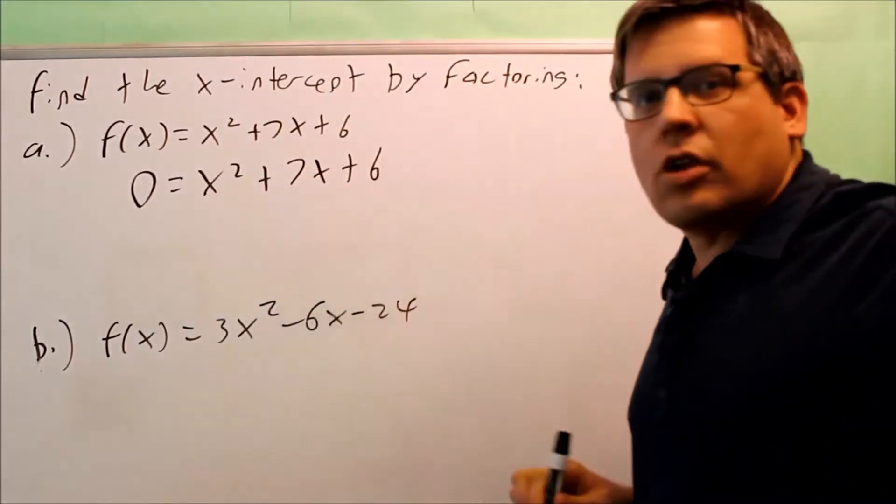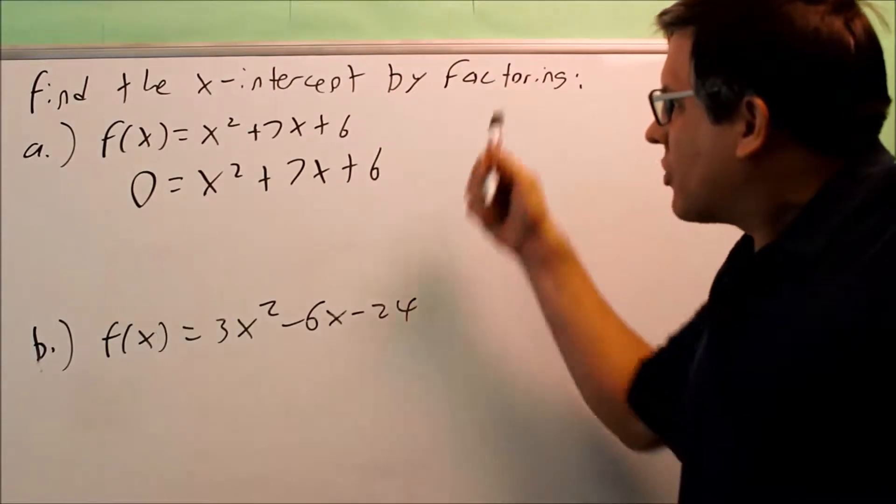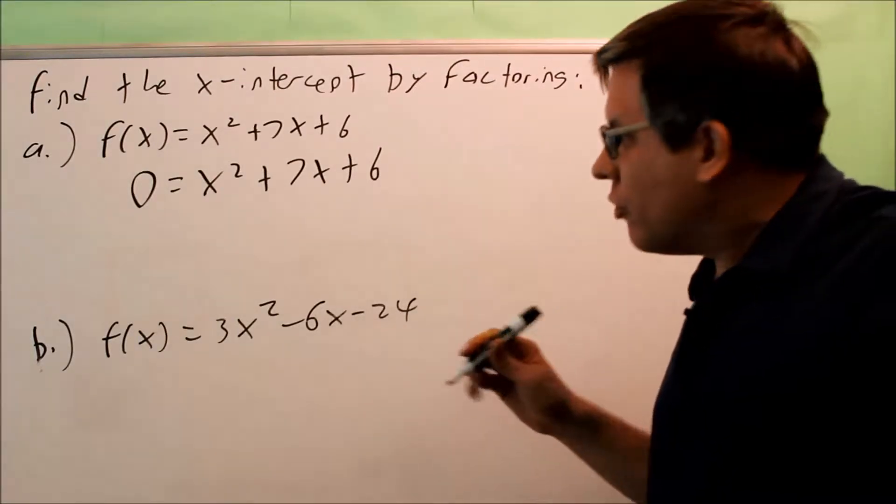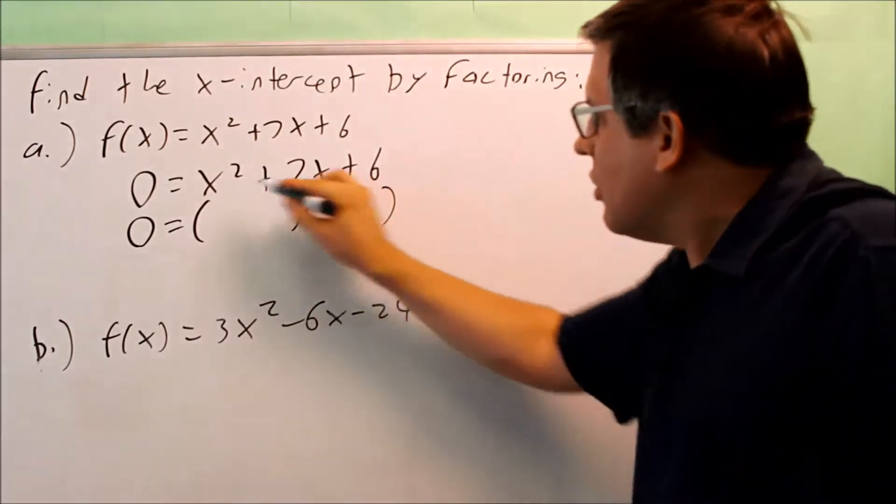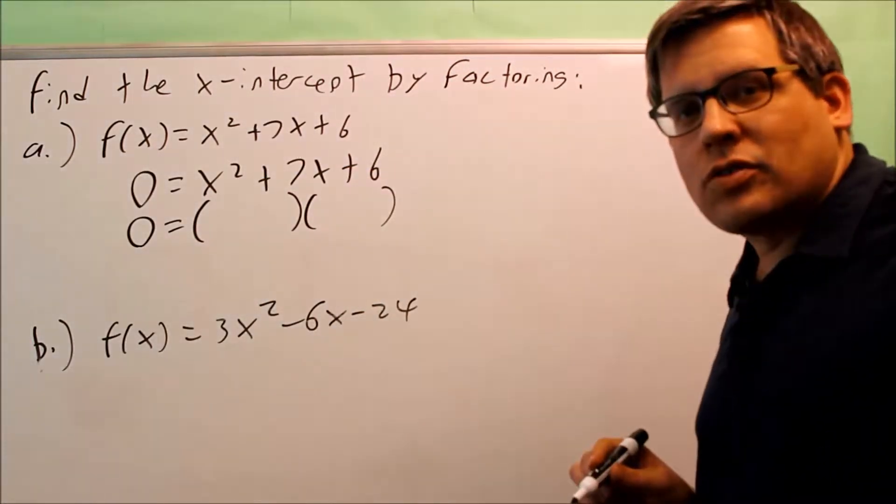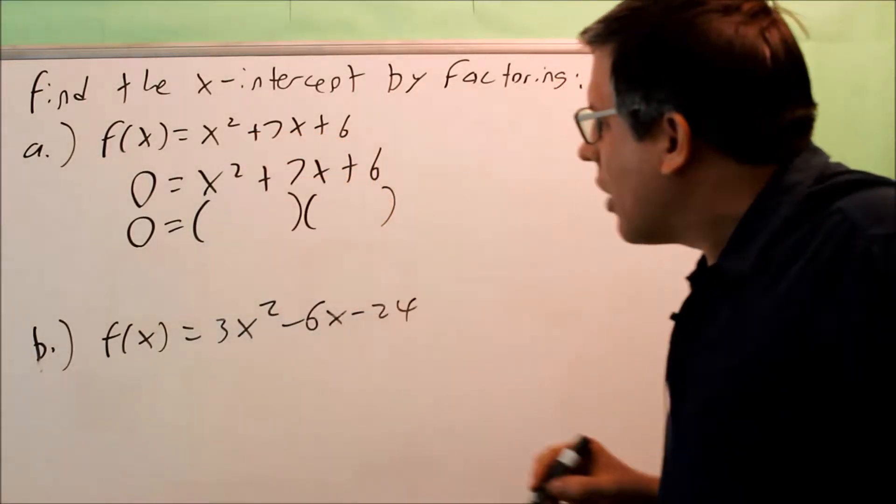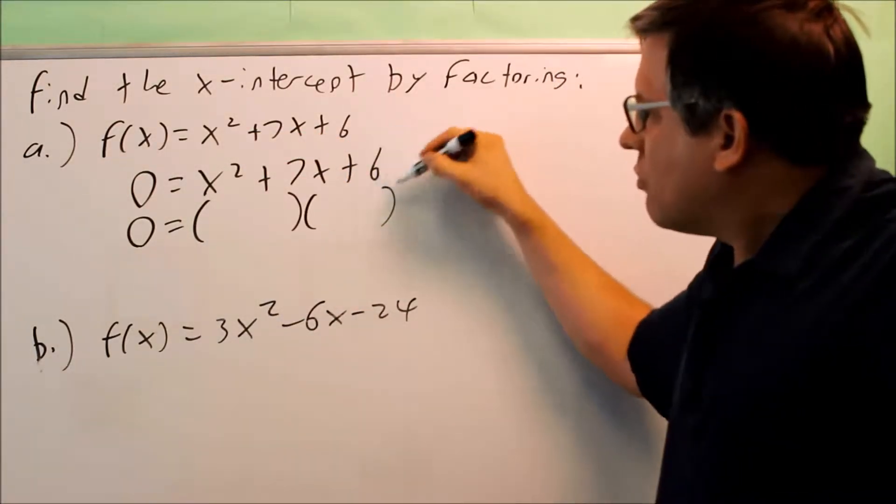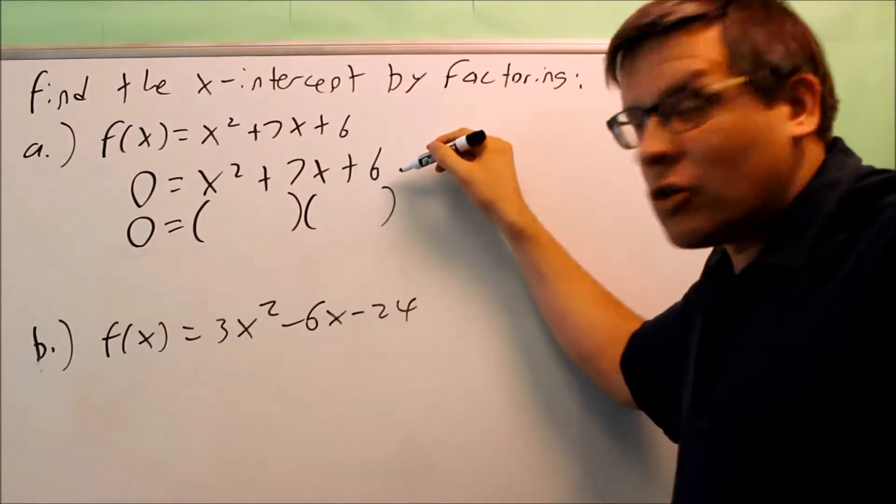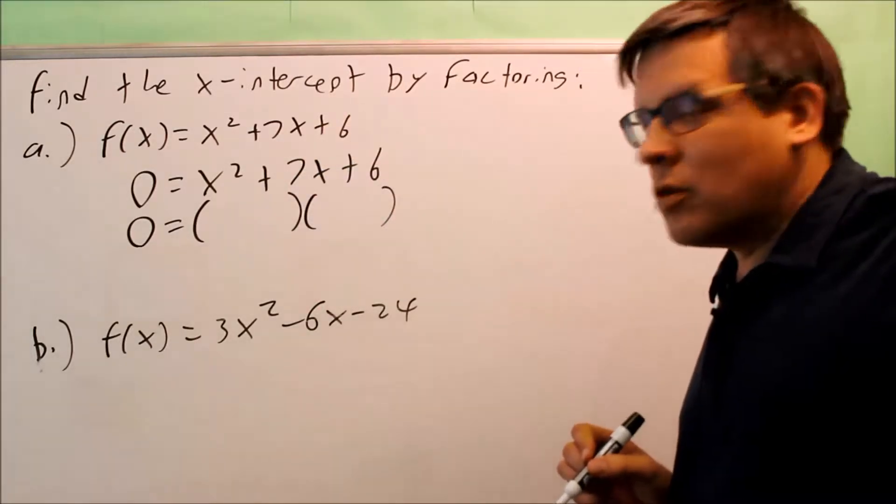So this is the equation that I want to now solve. We want to solve this one by factoring, which means that you're trying to find what two things multiply together to equal x squared plus 7x plus 6. If you have a 1 in front of the x squared, then what you want to do is you're looking for what two numbers multiply to make the last number but add to be the middle number.